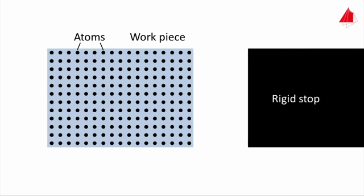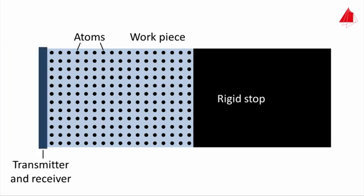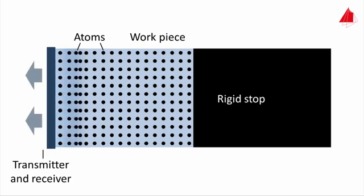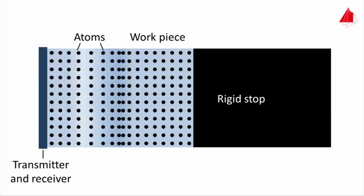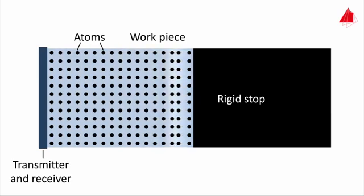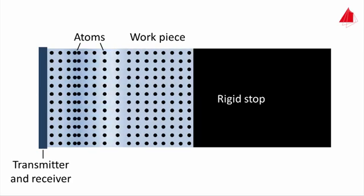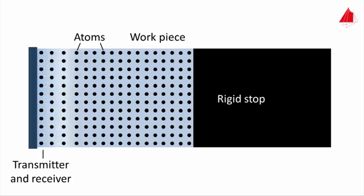To begin with, a rigid unyielding stop is attached to the right front end of the cylinder. At the left front end, a disc is installed to transmit and receive sound waves. Pushing and pulling briefly at the disc causes a longitudinal sound wave to propagate through the cylinder. When the sound wave reaches the rigid stop at the right side, it is reflected and runs back towards the disc, which now serves as a receiver.